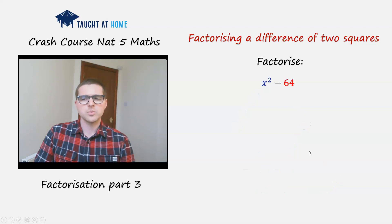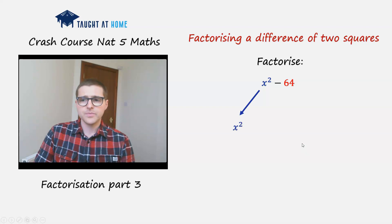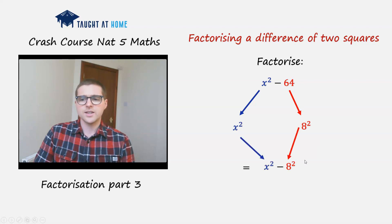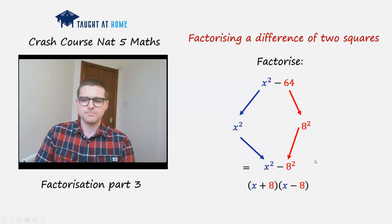How about this one? x squared minus 64. x squared is a perfect square, and 64 is a perfect square — it's 8 squared. We're subtracting, so it's a difference of two squares. We can write it as x squared minus 8 squared, and fully: x plus 8 times x minus 8.